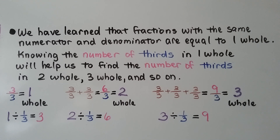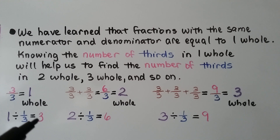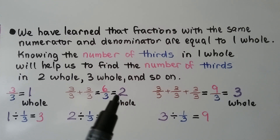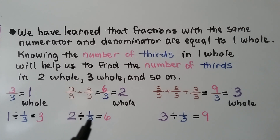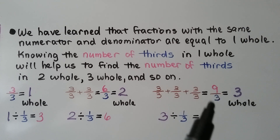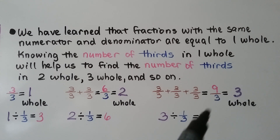We've learned that fractions with the same numerator and denominator are equal to one whole. Knowing the number of thirds in one whole helps us find the number of thirds in two whole, three whole, and so on. Three-thirds equals one whole, so one divided by one-third is three. Three-thirds plus three-thirds is six-thirds, equal to two whole, so two divided by one-third is six. And three-thirds plus three-thirds plus three-thirds is nine-thirds, equal to three whole, so three divided by one-third is nine.